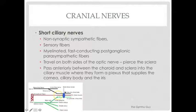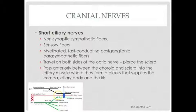All of these fibers combined are what form the short ciliary nerves: non-synaptic sympathetic fibers, sensory fibers, and myelinated fast-conducting post-ganglionic parasympathetic fibers. They travel on both sides of the optic nerve and pierce the sclera. They pass anteriorly between the choroid and the sclera into the ciliary muscle, where they form a plexus and supply the cornea, the ciliary body, and the iris.